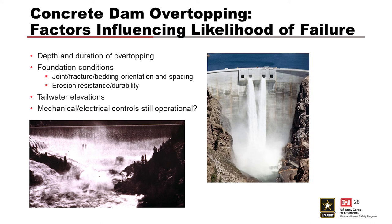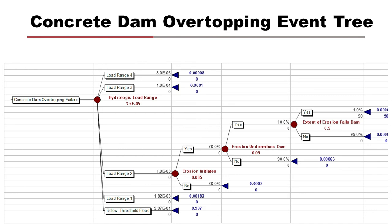For concrete dams, there are a few major factors that influence the likelihood of failure from overtopping. A key consideration is foundation jointing and materials — see chapter D1 on erosion of rock and soil for details. Gates and their successful operation are also an important factor. Here's an example concrete dam overtopping event tree. This event tree has four nodes: flood load ranges, erosion initiates, erosion undermines the dam, and extent of erosion fails the dam. Integration of hydraulics, rock mechanics, site geology, and foundation conditions is performed to estimate probabilities for the last two nodes.